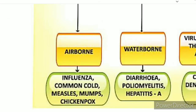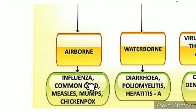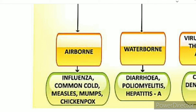In summary, airborne diseases are categorized in a tabular column covering bacteria and viruses. Viral diseases include influenza, common cold, mumps, and chickenpox. Bacterial diseases include tuberculosis, diphtheria, and whooping cough. Our next video will cover waterborne diseases. Thank you.